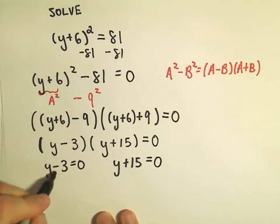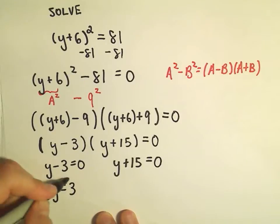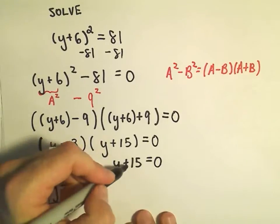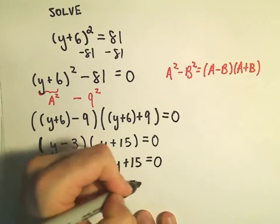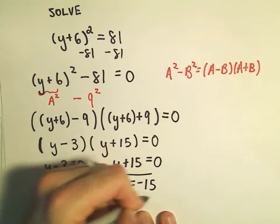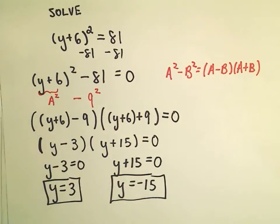I'll add 3 to both sides on the first equation and get y equals 3. And I'll subtract 15 on my second one to get y equals negative 15. And now we've got our two solutions.